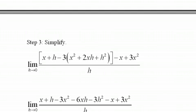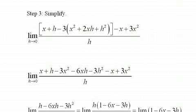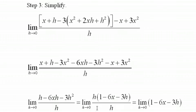Well, we still can't plug in h because we'll still get zero over zero. But what I'm going to do next is simplify. x and minus x will cancel out. Negative 3x squared and 3x squared will cancel out. And we'll end up with h minus 6xh minus 3h squared on top and h here.